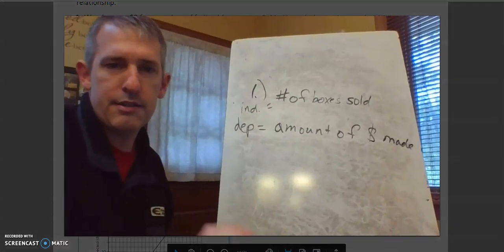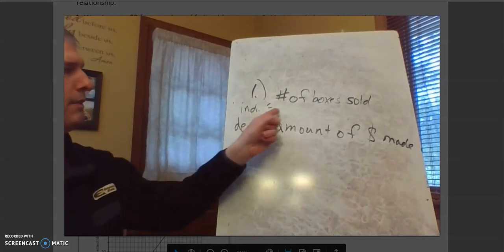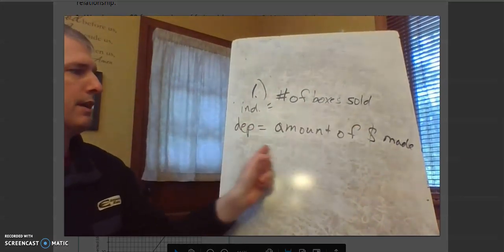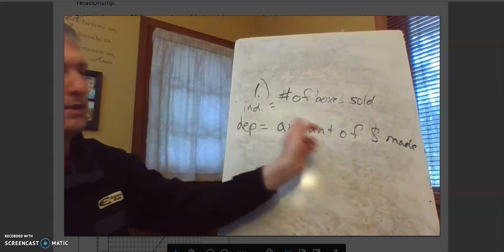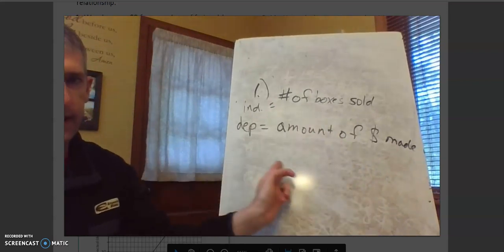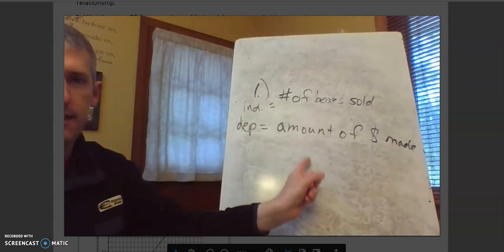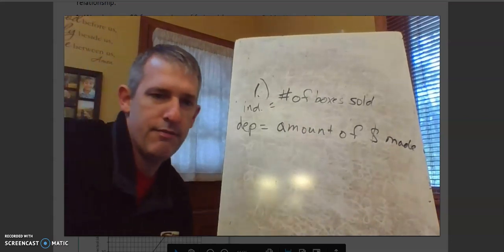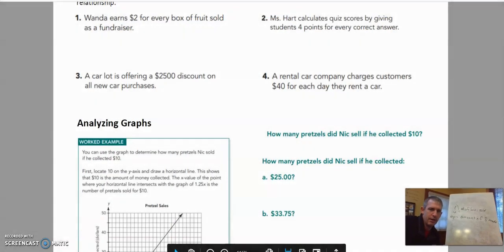Because the independent is our cause. If we sell more boxes, then we're going to get more money. If we sell less boxes, we're going to get less money. Cause and effect. So I think that's all we need to do there, right?